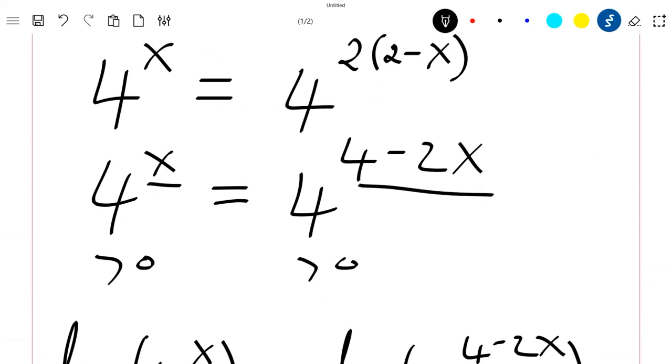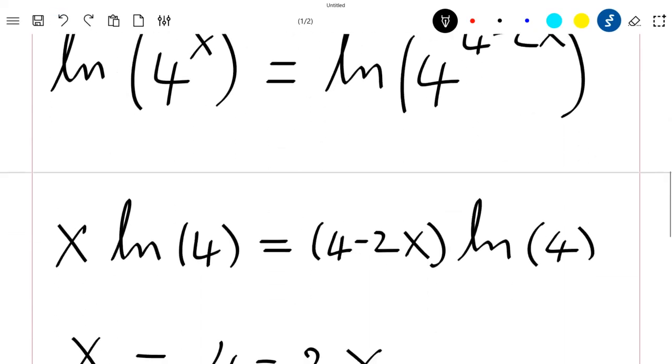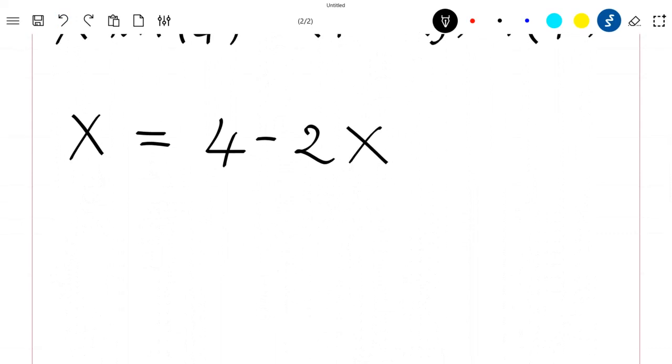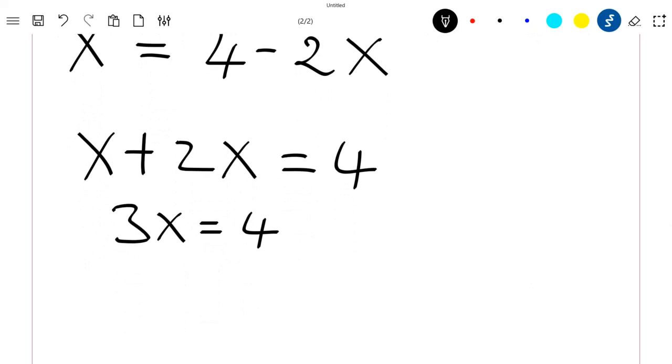From this last equation, we can directly see that our solution is 3x equal to 4, which implies that x, the solution of our equation, is equal to 4 divided by 3.